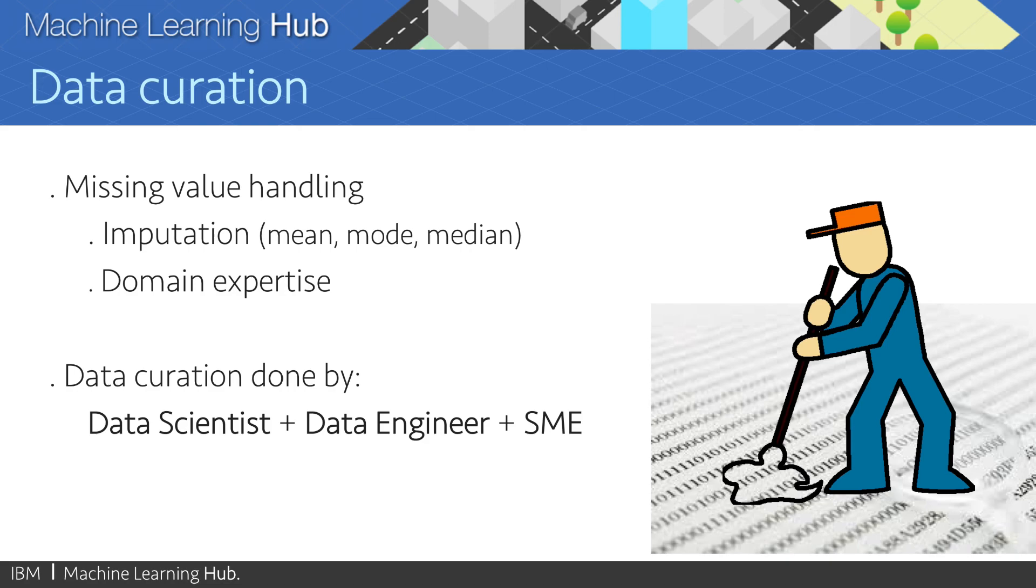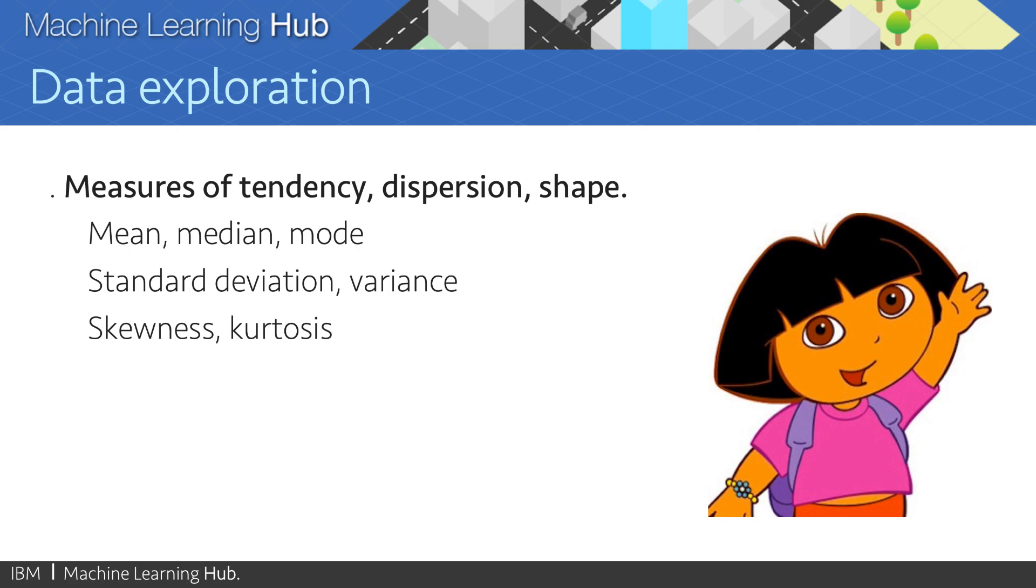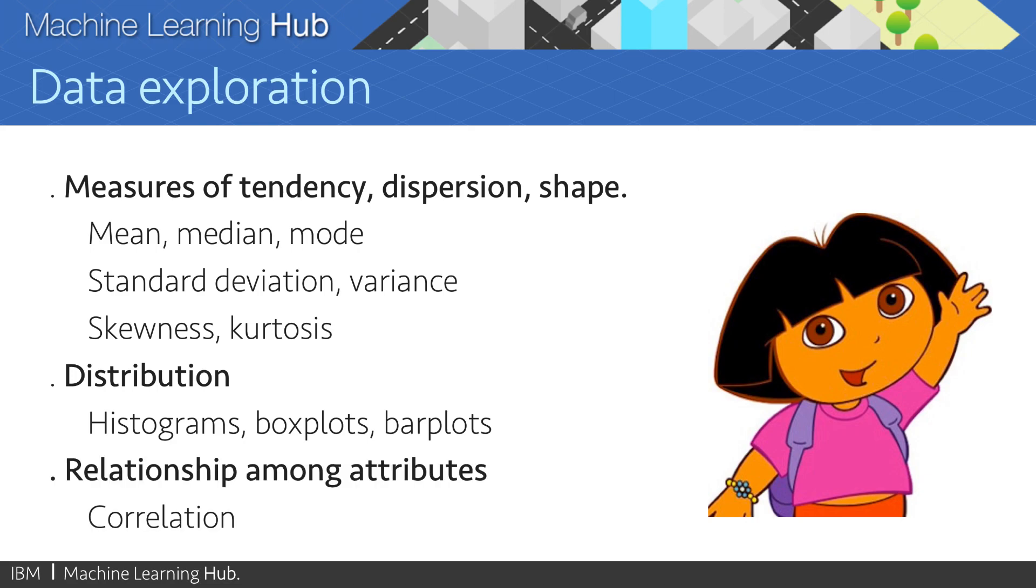Now, data exploration is another very important task within machine learning. Things as simple as computing the mean, standard deviation, median, mode of each of the features, distribution plots such as histograms, box plots, bar plots, and so forth, correlation among features or correlation between features and the variable you would like to predict. All of these are very useful to understand your data before even thinking about building a machine learning model.